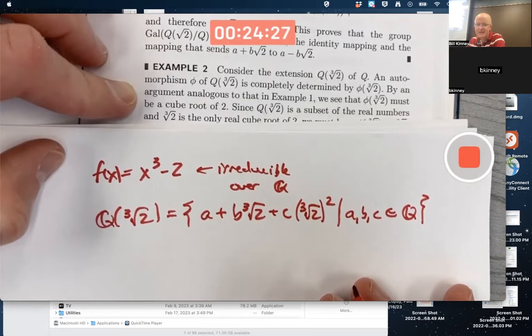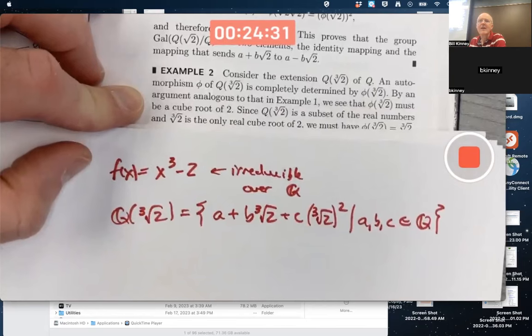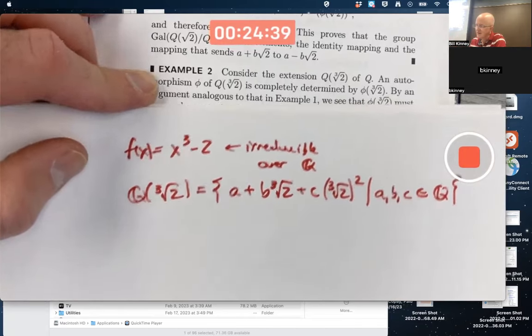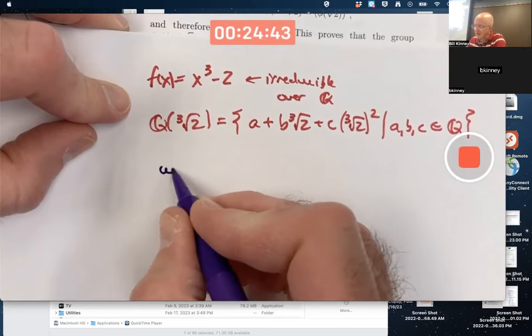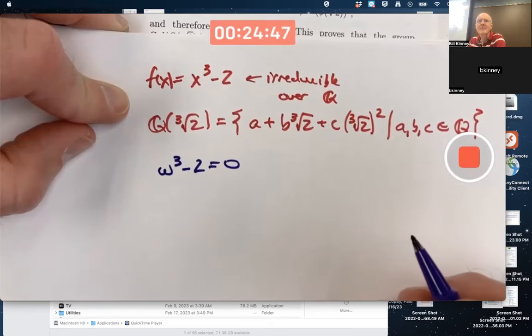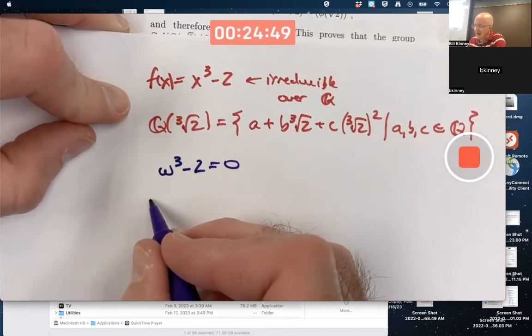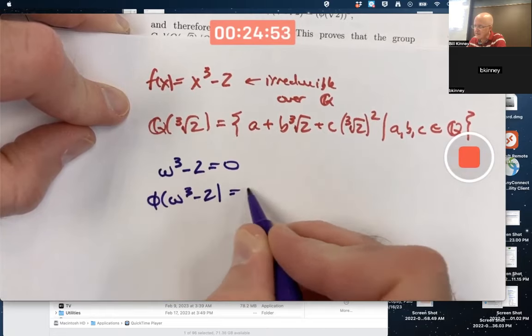By an argument analogous to example 1, this is what I was hinting at, that automorphisms being doubly operation-preserving permute roots of equations. We know if omega is the root of this equation and I apply phi to both sides, an automorphism,